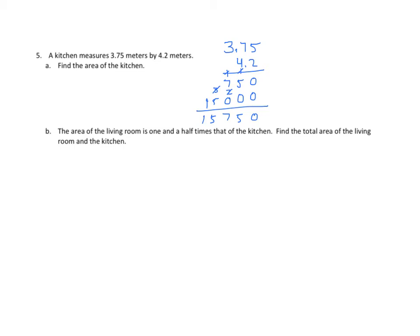Now, what do we have here? If we look at the first factor, the top one, we have 2 decimal places. The second factor has 1. So we expect a total of 3. So I count 1, 2, 3, and I'll insert that decimal right there. We notice that the answer is 15 and 750 thousandths. But I also know that that is equal to 15 and 75 hundredths, and that's what I'm going to use for the second part here — it just gets rid of one decimal place.